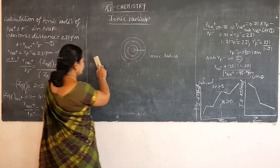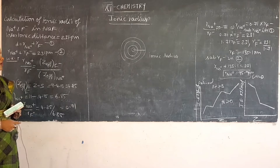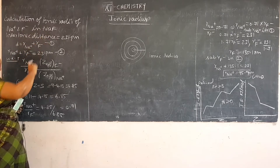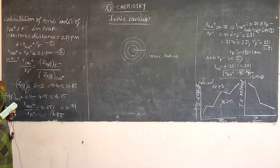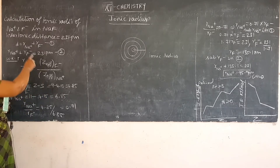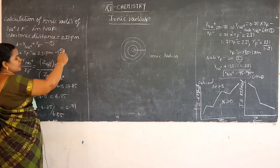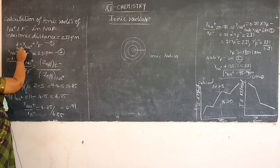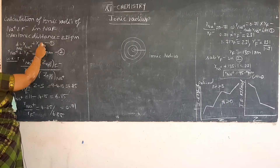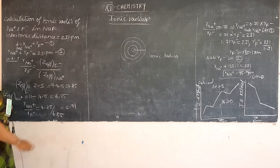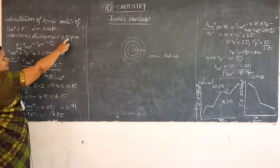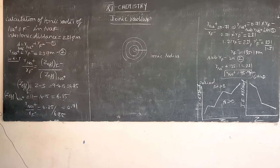Now we will calculate the ionic radii of Na+ and F- in NaF. The interionic distance given is 231 picometers. We write: D(NaF) = r_Na+ + r_F-. That is the first equation. Substituting the interionic distance: r_Na+ + r_F- = 231 picometers. That is the second equation.